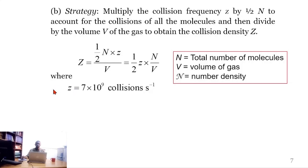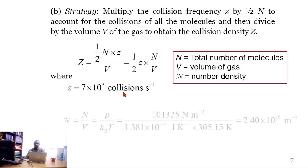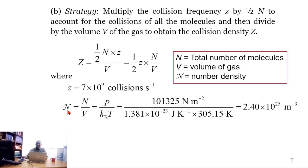The collision frequency z is 7 × 10⁹ collisions per second. The number density is the ratio of the total number of molecules to the volume of gas, and equals the pressure divided by the Boltzmann constant times temperature. Substituting the pressure, Boltzmann constant, and temperature gives a number density of 2.40 × 10²⁵ m⁻³.